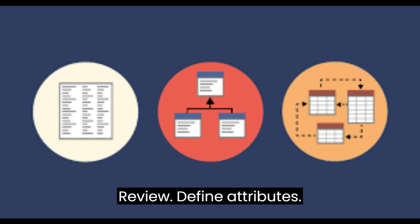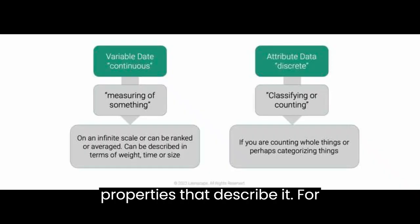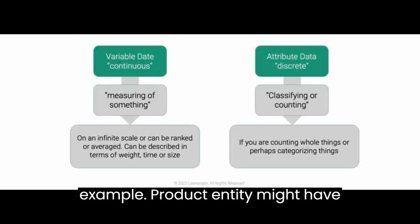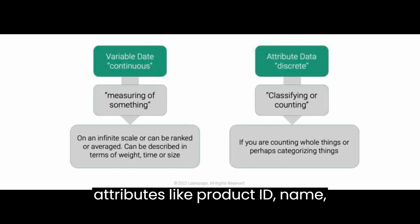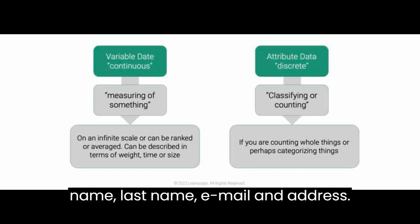Define attributes. For each entity, define the attributes or properties that describe it. For example, product entity might have attributes like product ID, name, price, description, and stock quantity. Customer entity might have attributes like customer ID, first name, last name, email, and address.